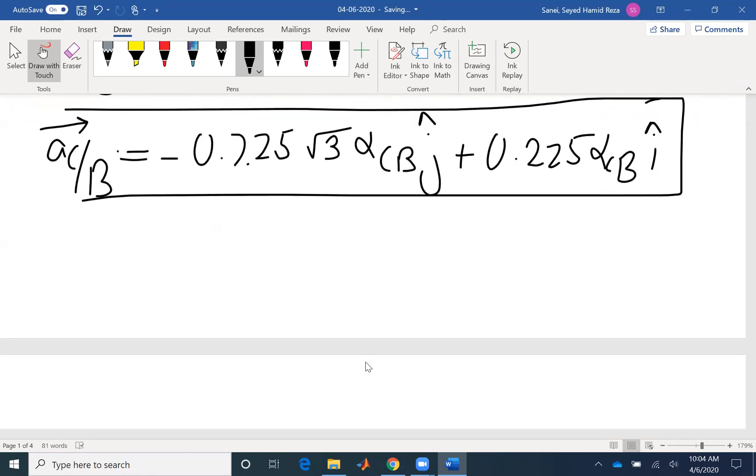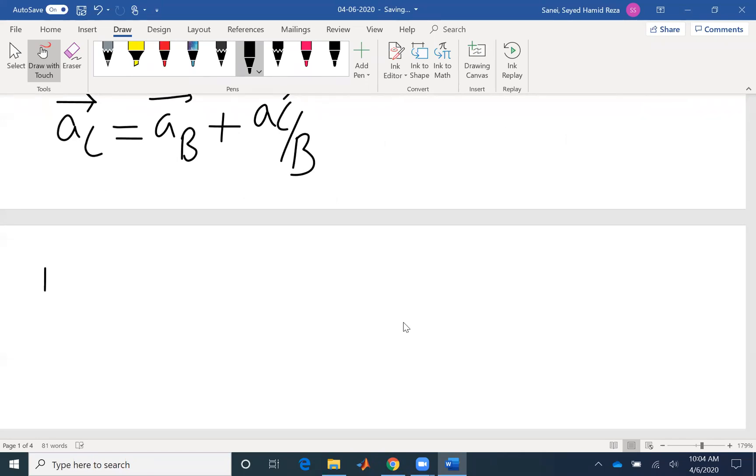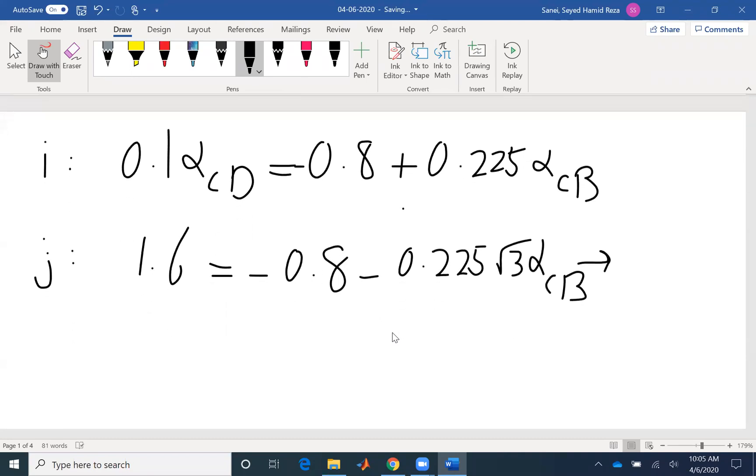Now I replace everything into my equation AC equals AB plus AC with respect to B. This equation is going to give me two equations, one in i direction, one in j direction. For i, I write the components on the right side: 0.1 alpha DC equals negative 0.8 plus 0.225 alpha CB. I have two equations, two unknowns in this equation. I need to move to the j component. On the left side I have 1.6 equals negative 0.8 minus 0.225 square root of 3 alpha CB. You can see in this equation I only have one unknown, so I can find alpha CB. Alpha CB is negative 6.16 radians per second squared.